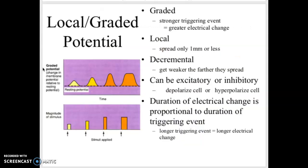These are the properties of the local or graded potentials. The first one is graded. So the stronger the stimulus, the stronger the electrical change. Here on the left, the top graph is showing the graded potential, how big it is and how long it lasts. The bottom graph is looking at the magnitude, how strong the stimulus is. You can see on the left, a small stimulus results in a small potential, and on the right, a large stimulus results in a large potential.